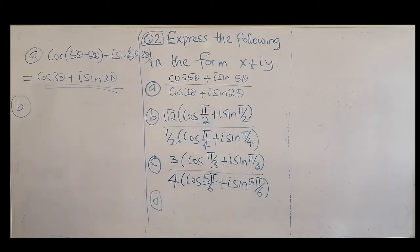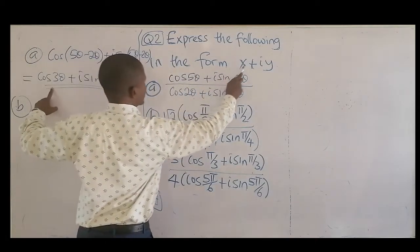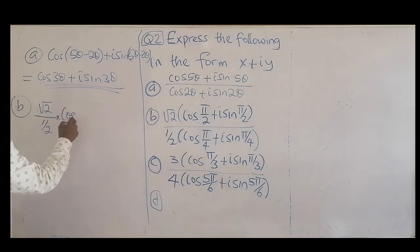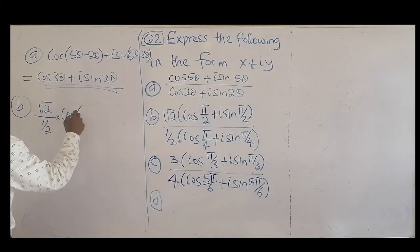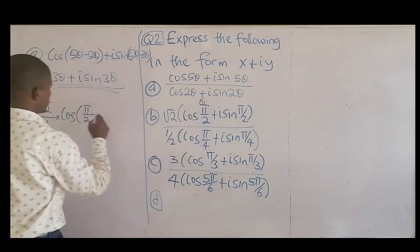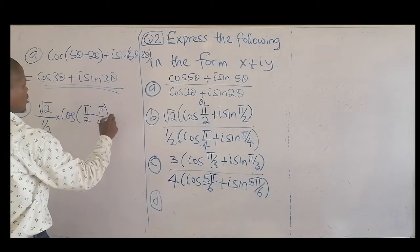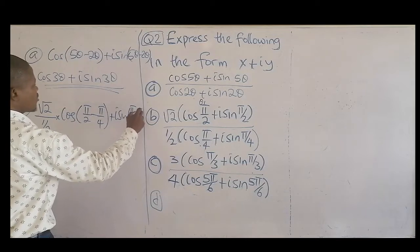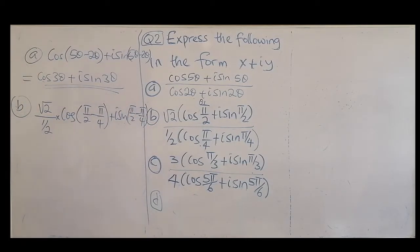The second question is in the form of what? It's in the form of X plus iY. Where the modulus for this one is 1. So 2, it's going to be equation 2. The B part is going to be root 2 over 1 over 2, then times cos pi over 2 minus pi over 4, then plus i sine pi over 2 minus pi over 4. So that's what we have.